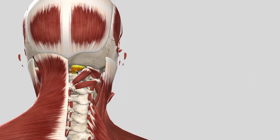The final muscles are the muscles of the back of the head. Highlighted on screen is the rectus capitis minor, and then the next highlighted muscle is the rectus capitis major. So the smaller muscle highlighted first is the rectus capitis minor, and the bigger one just below it is the rectus capitis major.